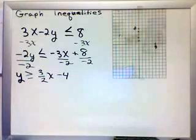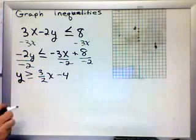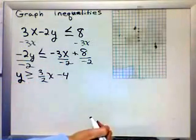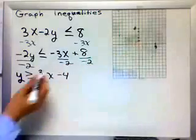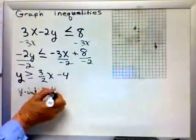And then to graph, I'm graphing an inequality, but the first thing I want to do is graph where is the line y equals 3 halves x minus 4. Well, the y-intercept is minus 4.